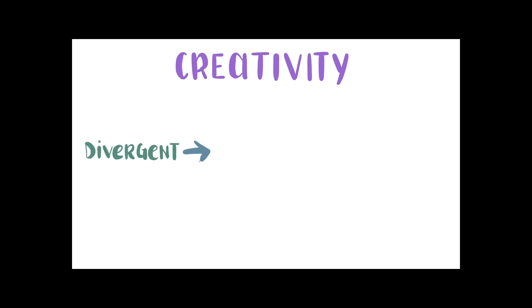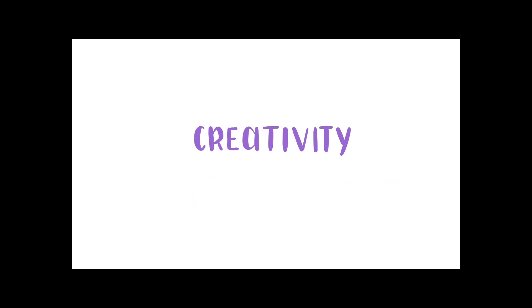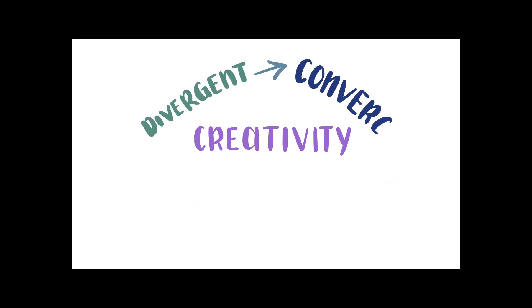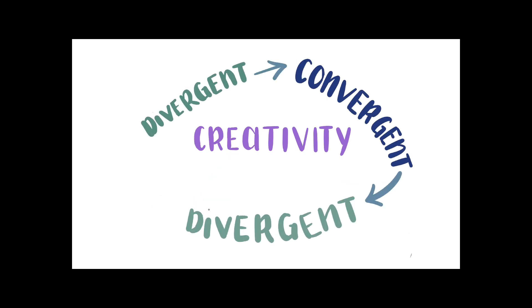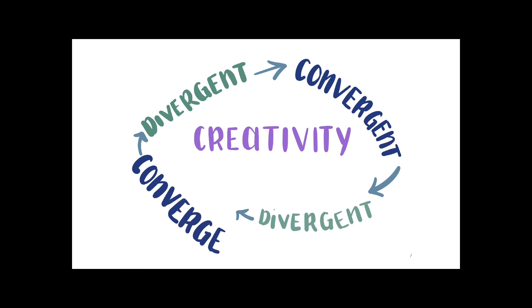It doesn't just end here. Creativity is a cycle. You can take your narrowed down ideas and use divergent thinking to build upon them and then convergent thinking again and repeat this however long you need. While there are other factors that can affect your creativity levels, learning the cycle of creativity and making an effort to balance your convergent and divergent thinking is one of the first steps to achieving your creative goals.